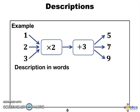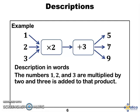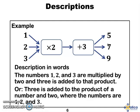Let's have a look at descriptions in words. The words show what has happened to the input. So we took a number, we multiplied it by 2 and then we added 3. The numbers 1, 2 and 3 are multiplied by 2 and 3 is added to that product. Or we could say 3 is added to the products of a number and 2 where the numbers that are used are 1, 2 and 3.